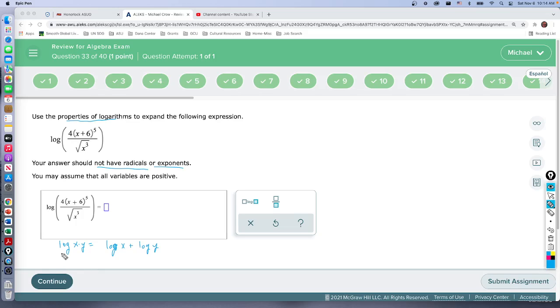If I have log of x divided by y, then that property tells us we end up with log of x minus log of y. So anything in the denominator always ends up being negative.